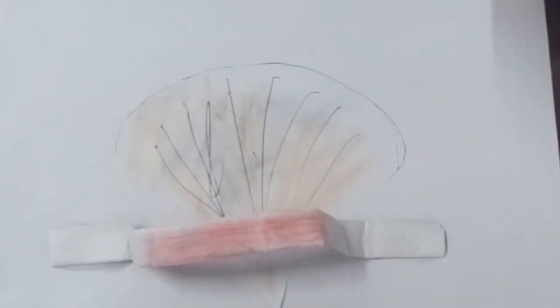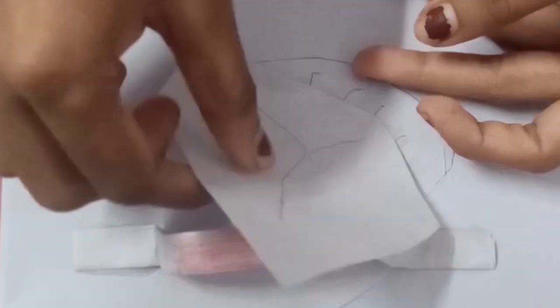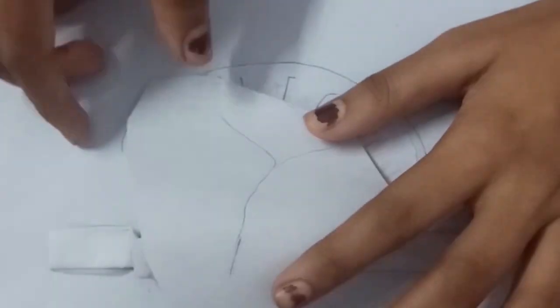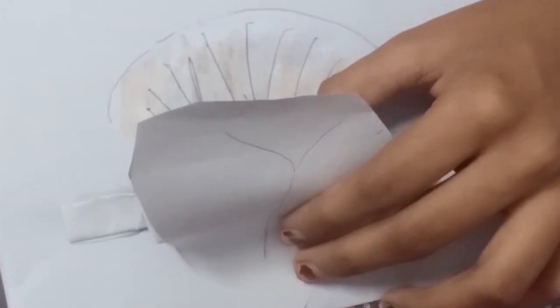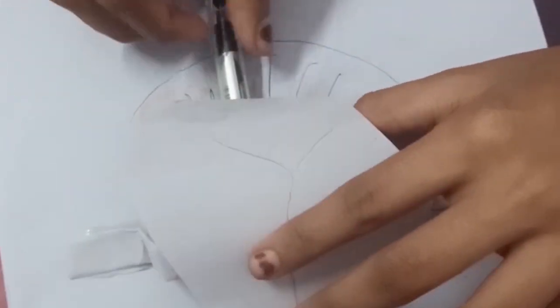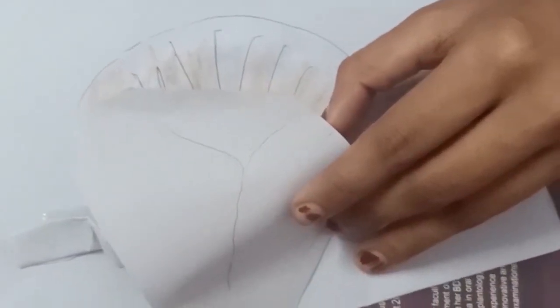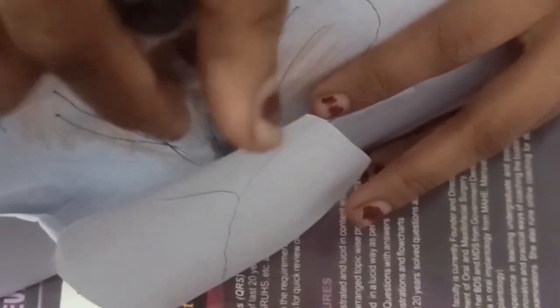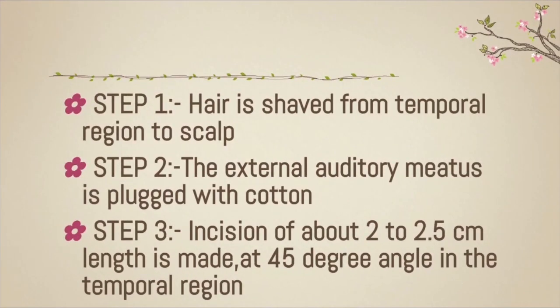Now we are keeping the deep temporal fascia back in place. You can see the lower part has two layers, almost covering the zygomatic arch. This is how we are going to place our instrument — the Bristowe periosteal elevator — in Gilles temporal approach, to bring the fragments back into alignment.